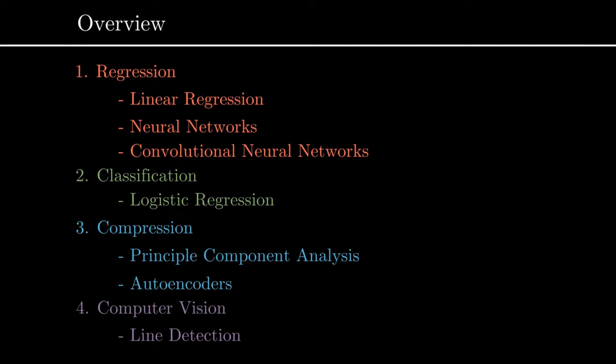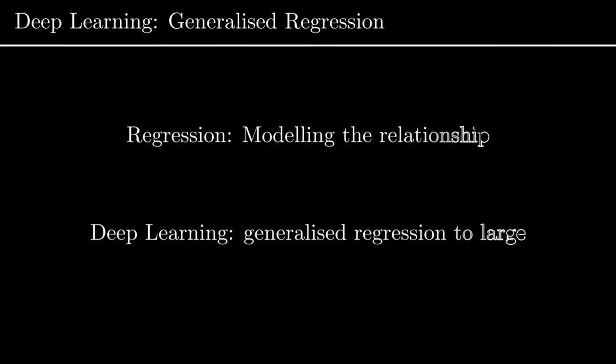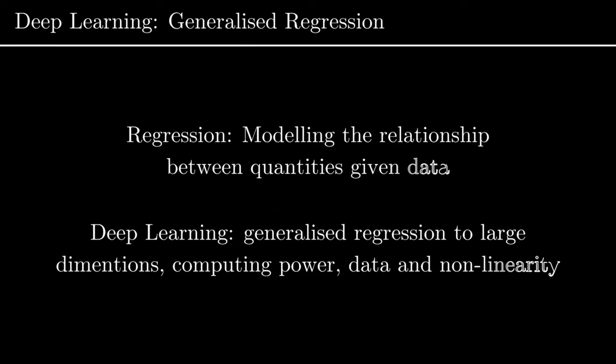So that was a lot of jargon — let's try to break all of this down. In deep learning, this is essentially generalized regression. First of all, what is regression? This is modeling the relationship between quantities given some data. If we have some x values and y values, we want to learn the relationship between these values, so that if we have some new x value in the future we can make a prediction of what the y value would be.